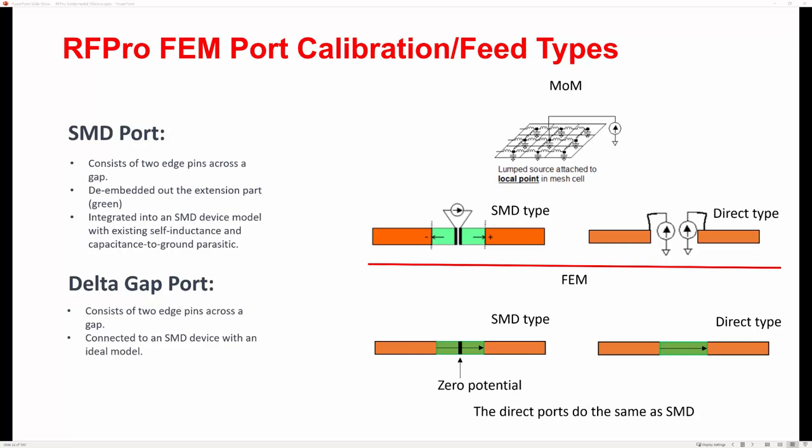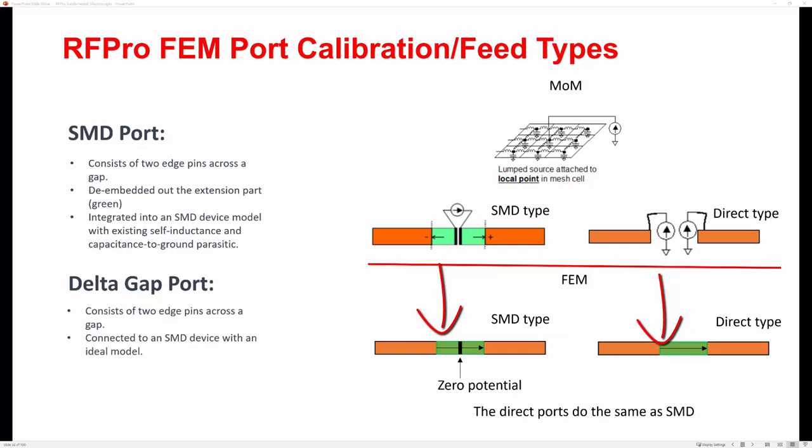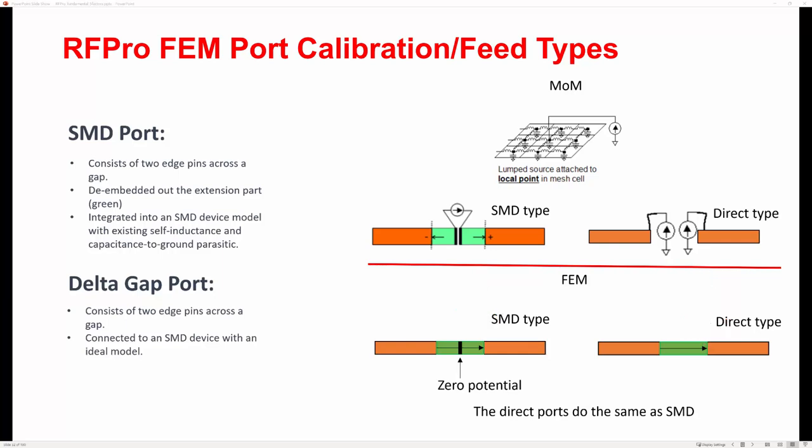Contrasting the approach in Momentum, which uses a lambda source at a local point, the source applied in FEM is different from the calculated current in the same cell when an extended transmission line is applied. In FEM, it uses a potential representation — the extended transmission line has zero potential at the contact point. When the engine calculates the transmission line, it calculates the potential from one edge to the other, exactly as it does for the direct type when adding the edge sheet port. So FEM inherently addresses self- and mutual impedance coupling effects. Unlike Momentum, where explicit de-embedding is required, FEM circuits exhibit an automatic de-embedding effect.